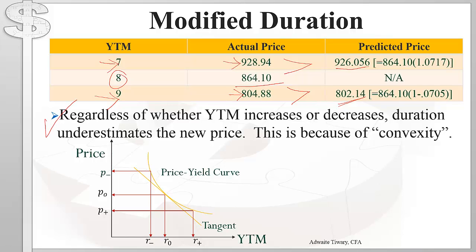This result is due to the convexity of the relationship between price and yield for a bond. The curve is the price-yield curve, and the tangent line is used to compute the modified duration. Notice that the tangent is always below the price-yield curve — that's why modified duration's prediction of the bond's price is always lower than the actual bond price. For example, at yield R-plus, the predicted price is lower than the actual price P-plus.